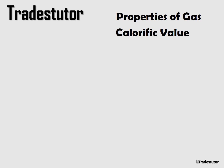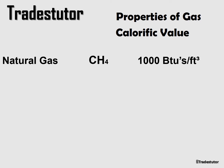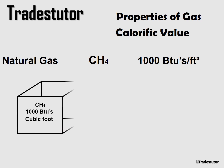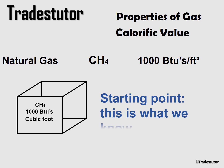A lot of people have trouble with calorific values, so we'll sort that out in this short tutorial. We have natural gas, CH4, at 1000 BTUs per cubic foot. If we fill a cubic foot with natural gas, we get 1000 BTUs of energy. That's the calorific value — the number of BTUs in a given volume. This is our starting point.